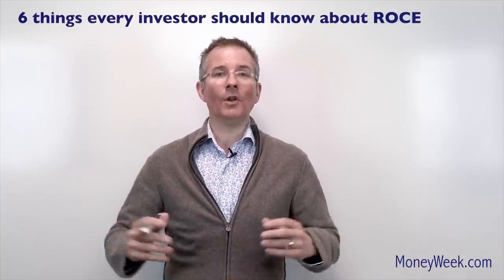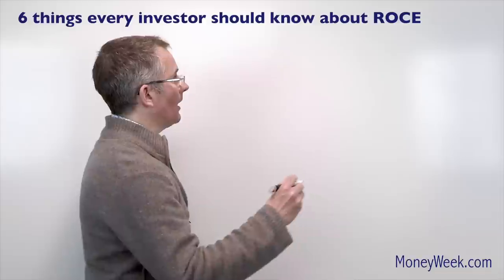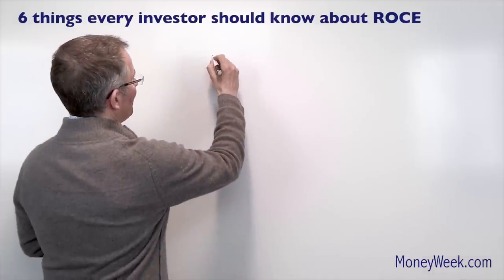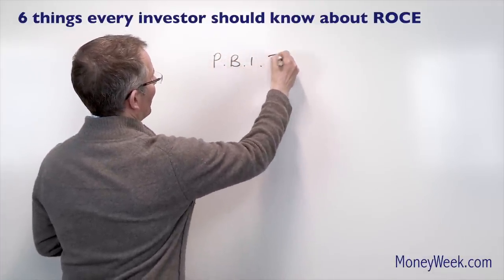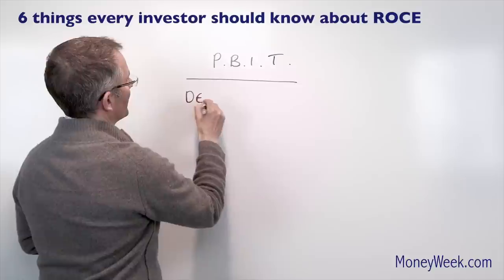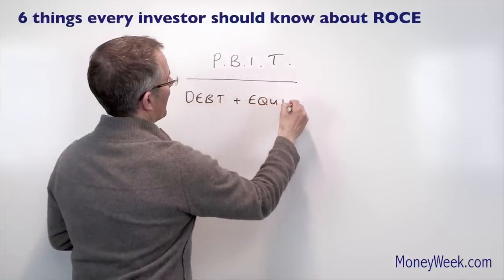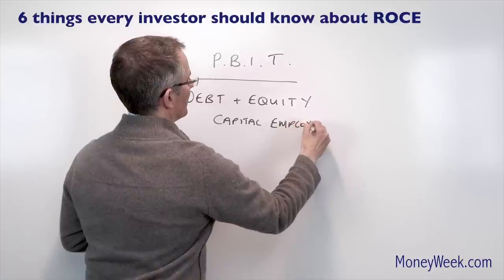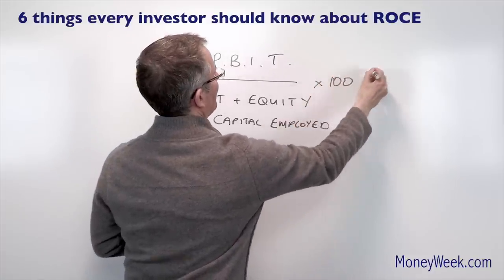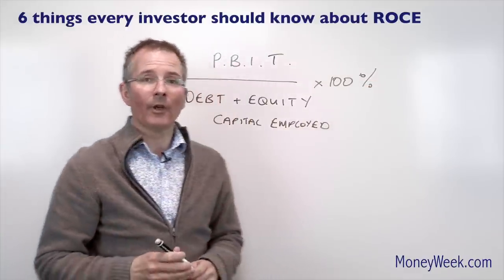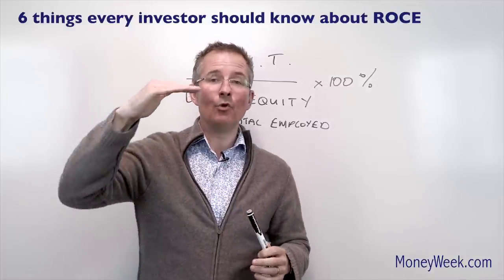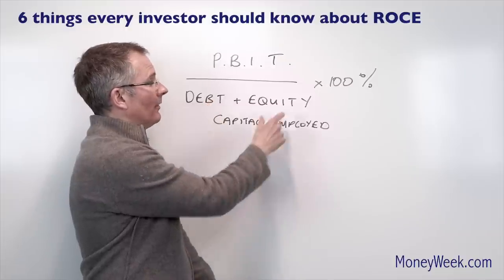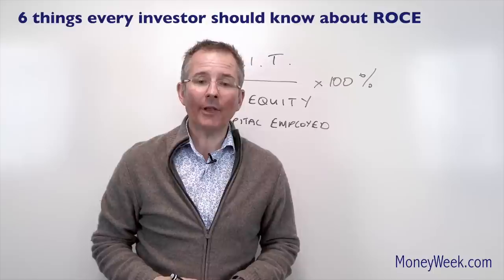What is ROCE — return on capital employed? In a nutshell, it is profit before interest and tax from the profit and loss account, over debt and equity capital employed. It's usually expressed as a percentage. So earnings or profit before interest and tax — that's a number that appears about two thirds of the way down the P&L, a fairly key number — over debt and equity capital employed, meaning the contribution from lenders and the contribution from shareholders.